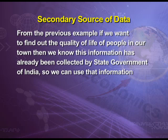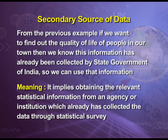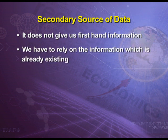The secondary source of data collection can also be understood by continuing with the last example. If we want to find out the quality of life of people in our town and this information has already been collected by the state government or some other agency, we can use that information. It implies obtaining relevant statistical information from an agency or institution which has already collected the data through a statistical survey. It does not give us first-hand information — we rely on information which is already existing.